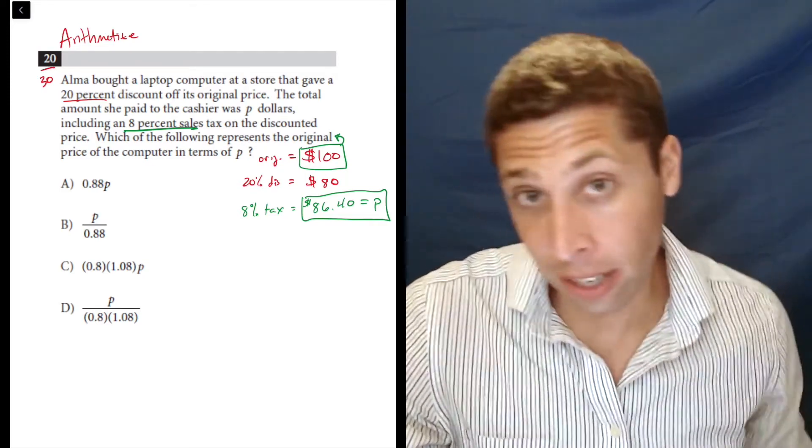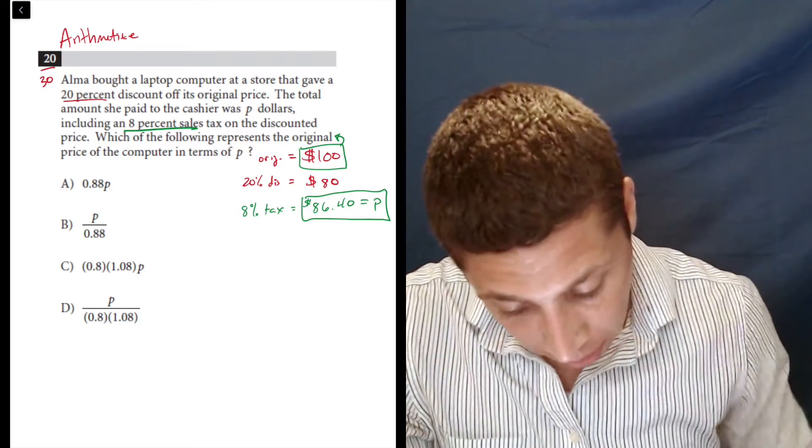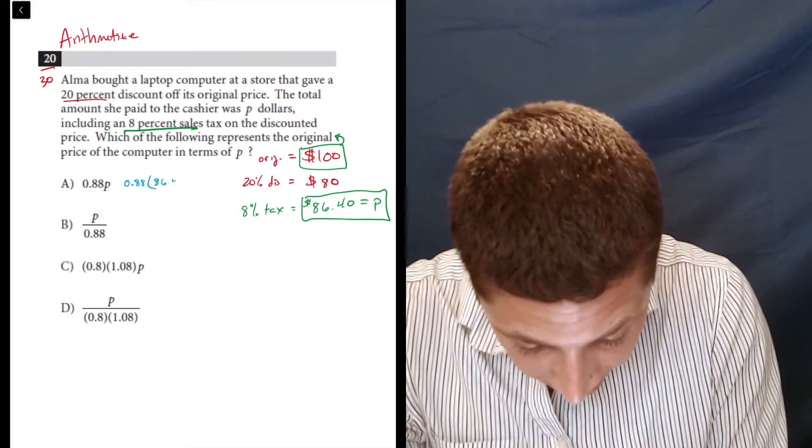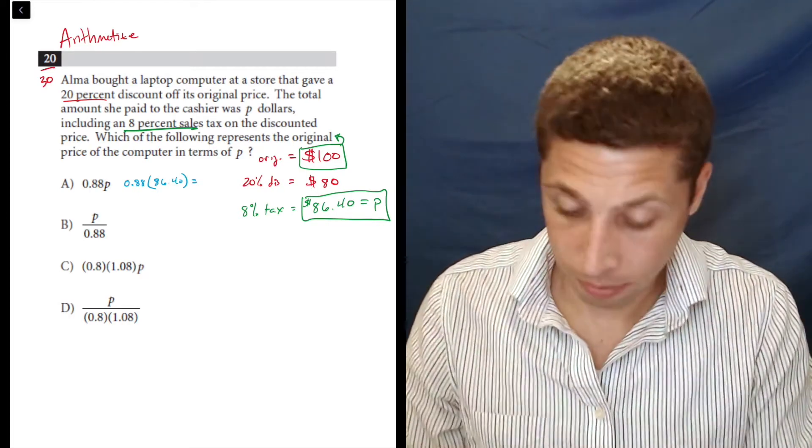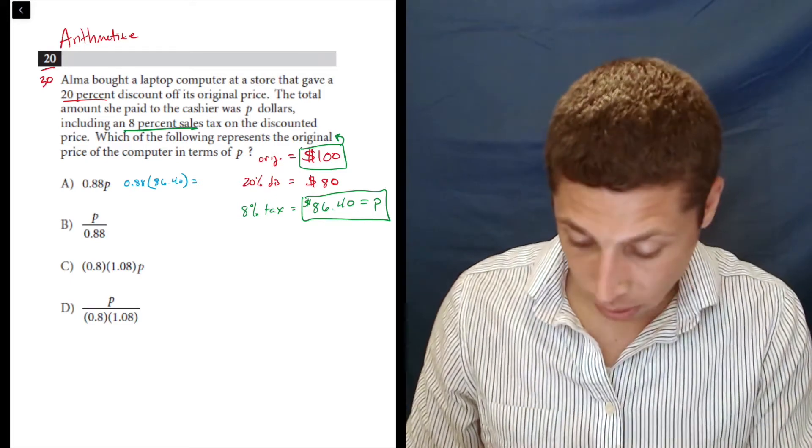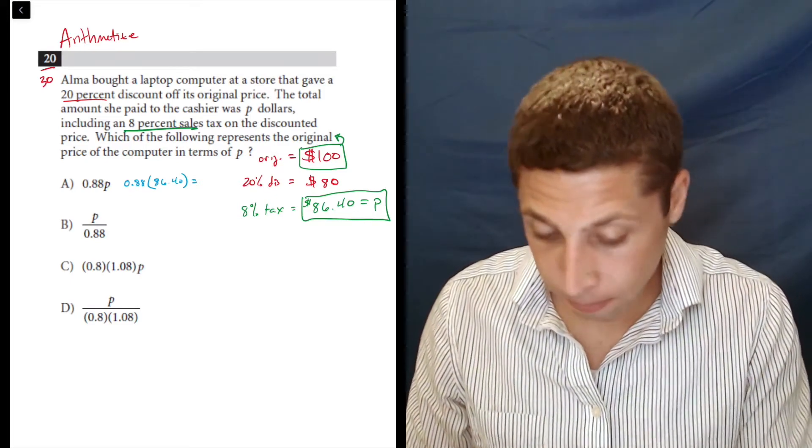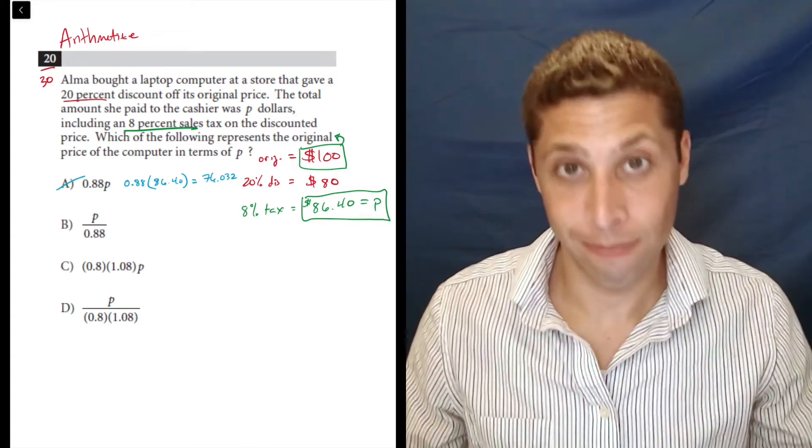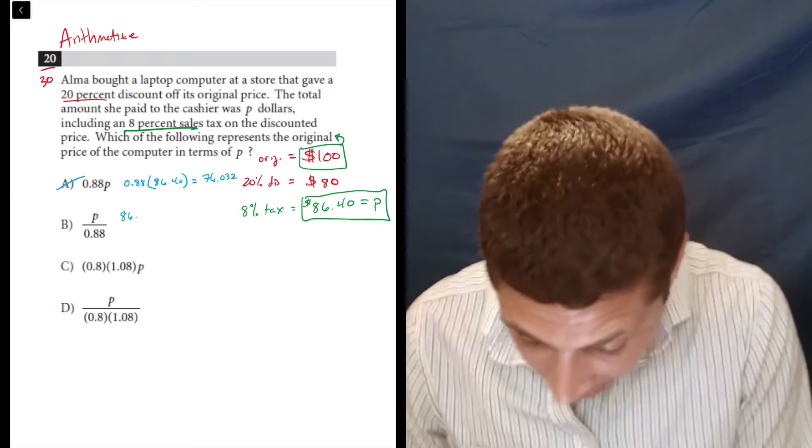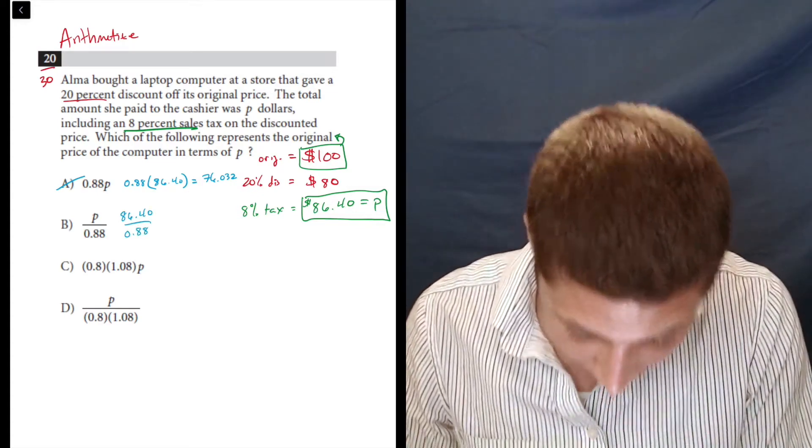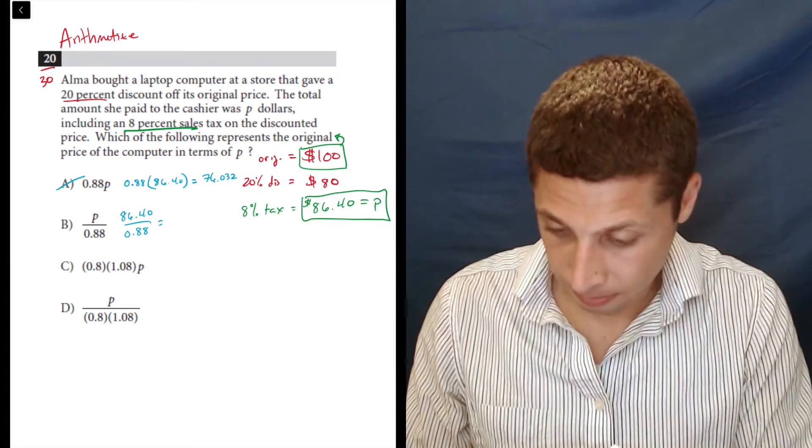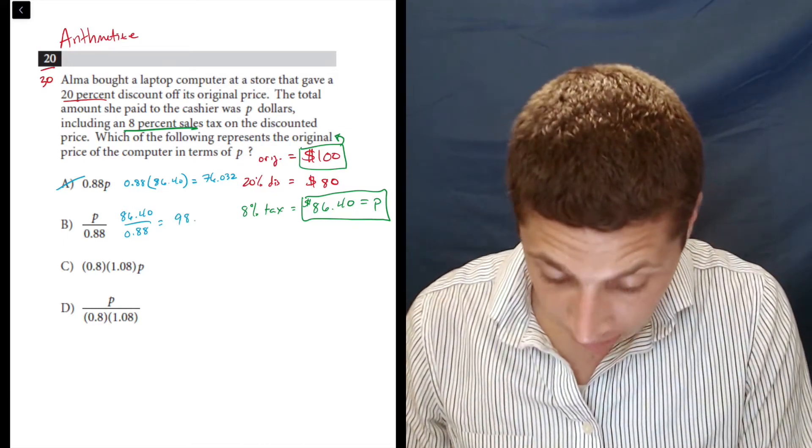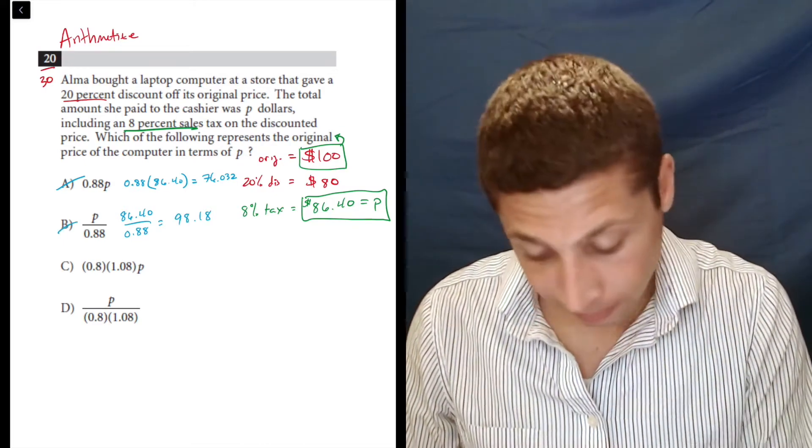So watch, let's do it for choice A. We're going to do 0.88 times 86.40. And it's a calculator question, so don't be shy about using it. I get 76.032. So not 100. If I do 86.40 divided by 0.88, I get close, 98.18, but it's got to be 100.